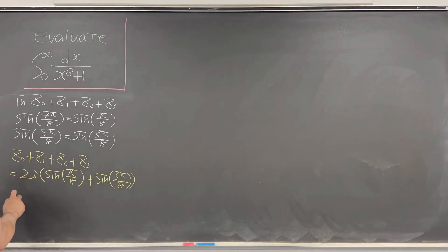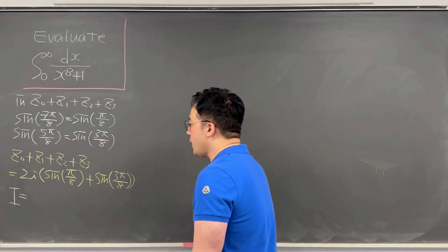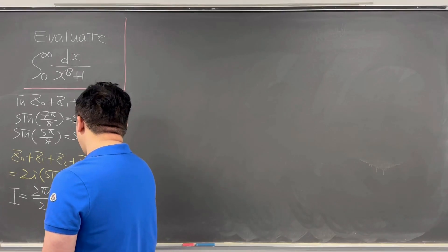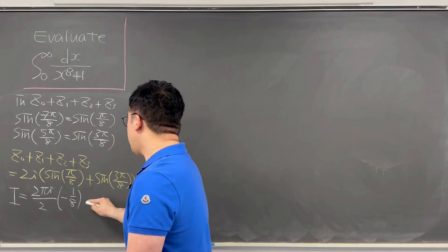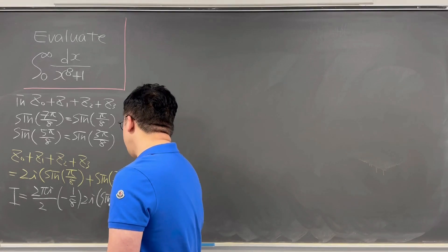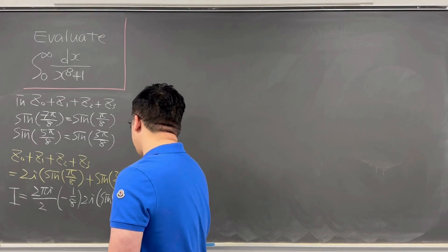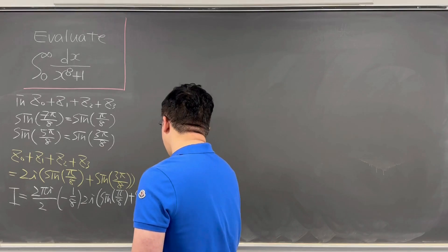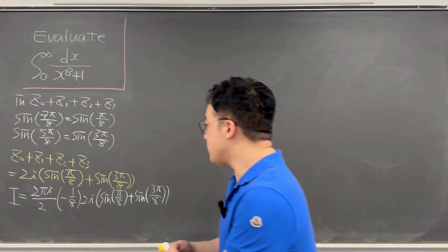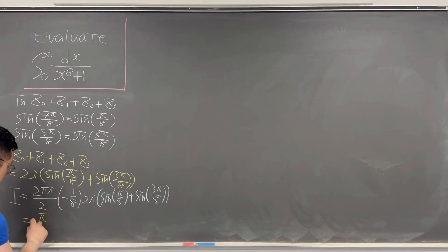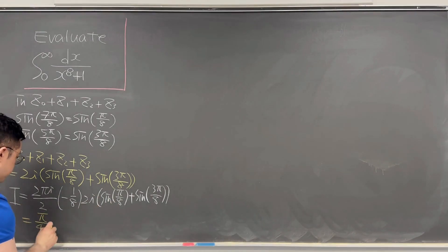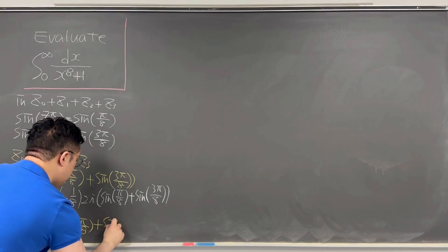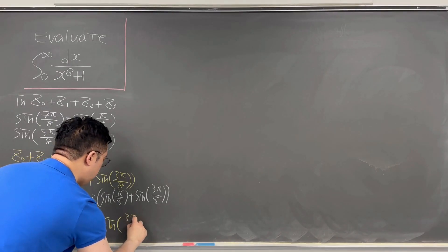Therefore the integral I equals (2πi/2)·(−1/8)·2i·(sin(π/8)+sin(3π/8)), which simplifies to π/4 times (sin(π/8) + sin(3π/8)).